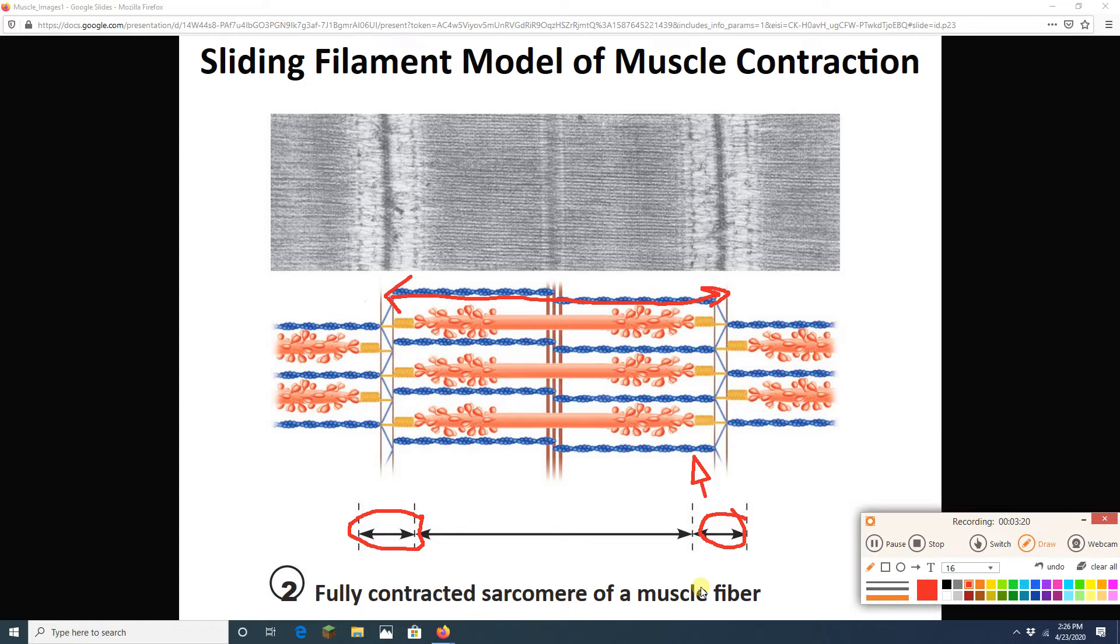Z-discs are attached to the sarcolemma. So if the Z-discs get pulled inward, the sarcolemma, the membrane, gets pulled inward. That means the whole muscle cell is getting smaller. And of course, this is just one sarcomere.